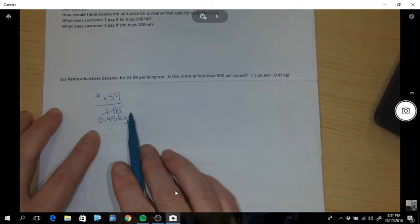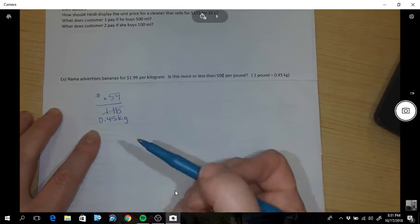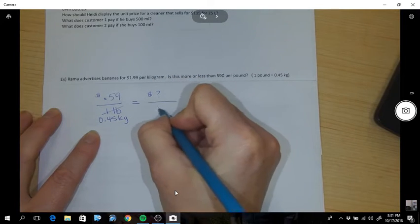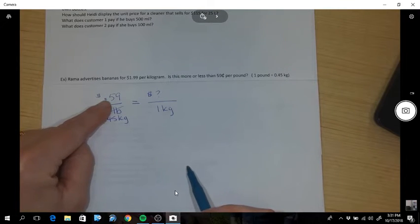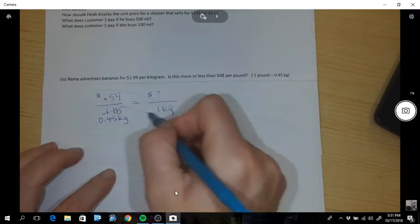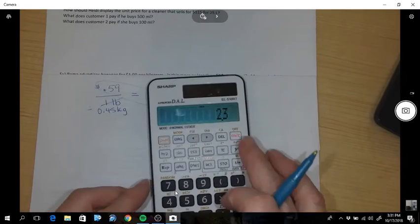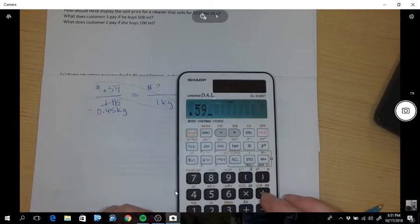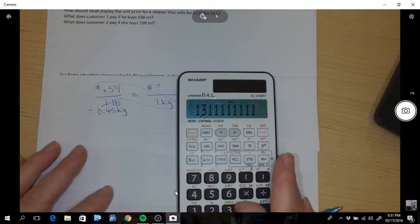Okay, now we're comparing it to this price per 1 kg. So I now want to know the price per 1 kg when this costs 59 cents per 0.45 kg. So you can cross multiply, divide. So 0.59 times 1 I don't need to do. Divide it by 0.45 and I get $1.31.